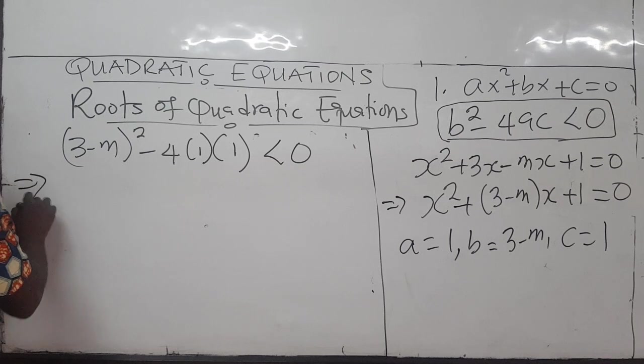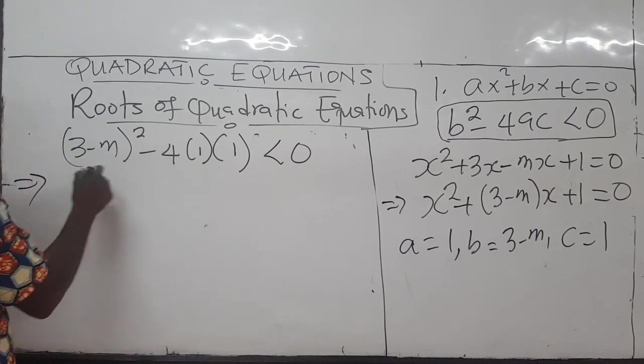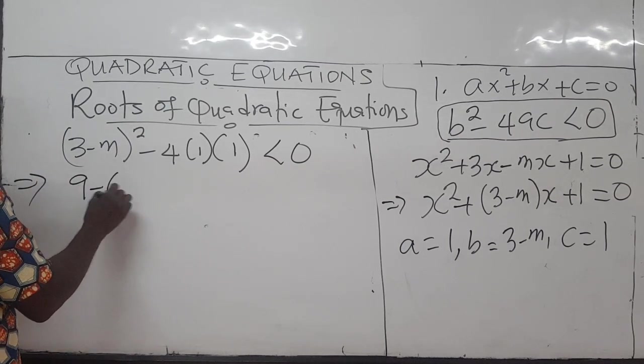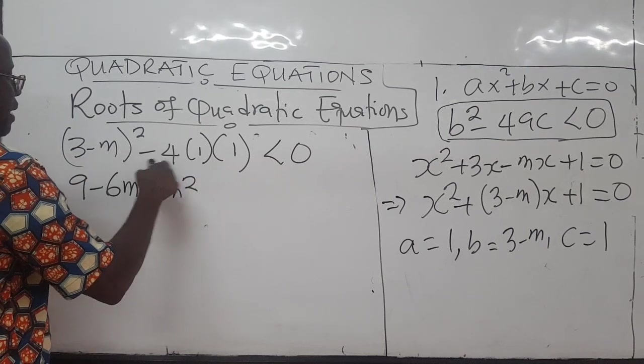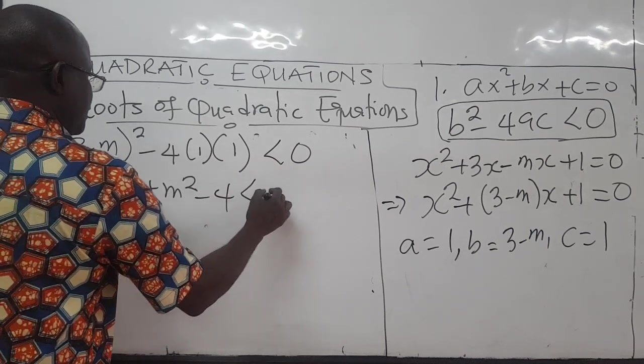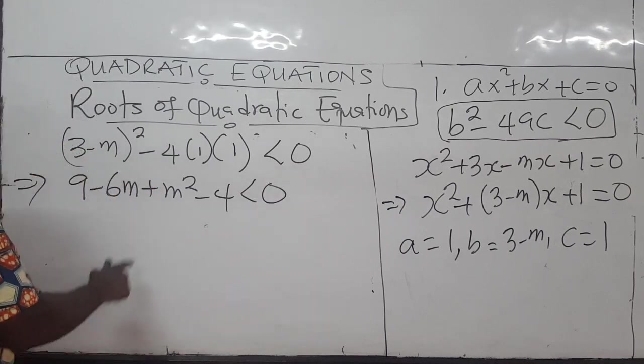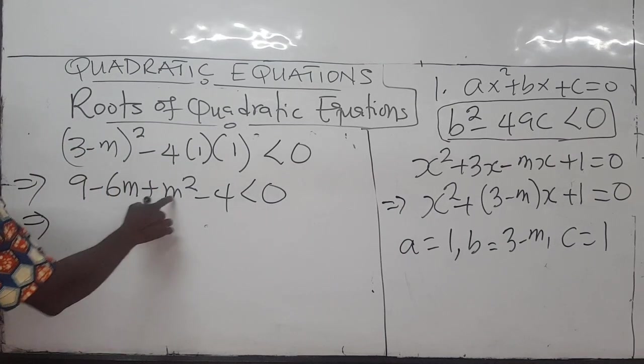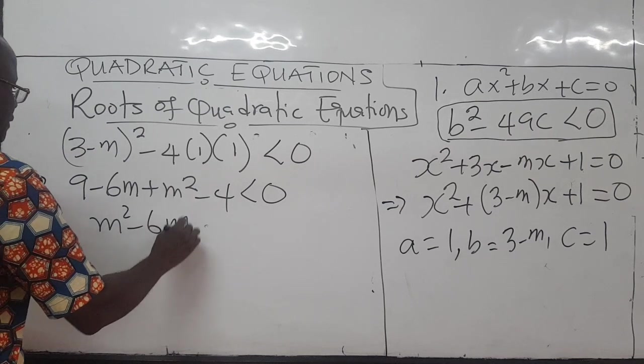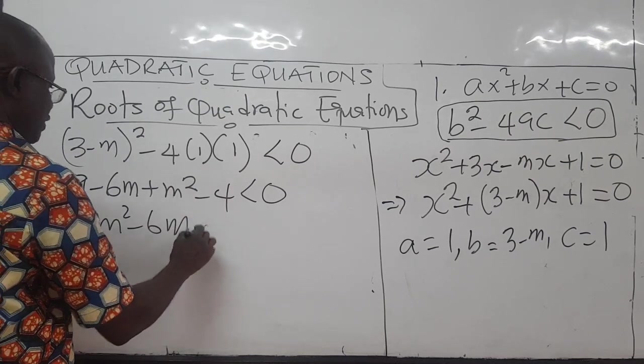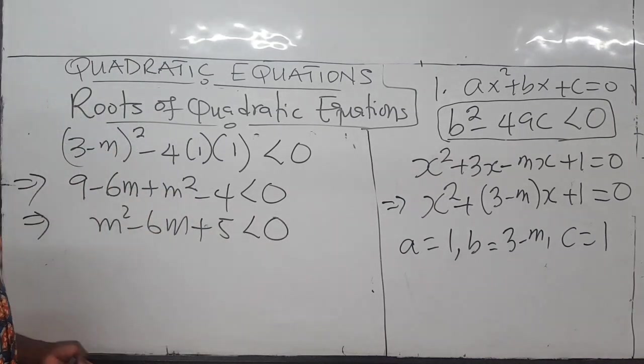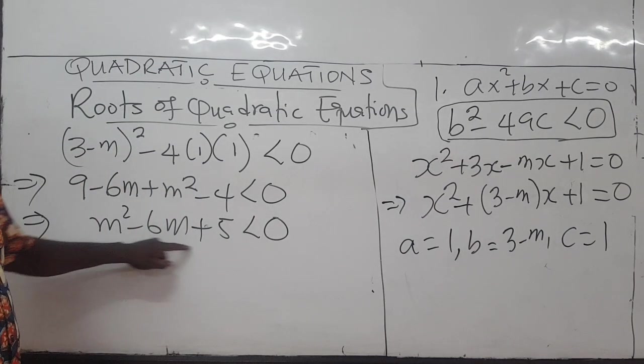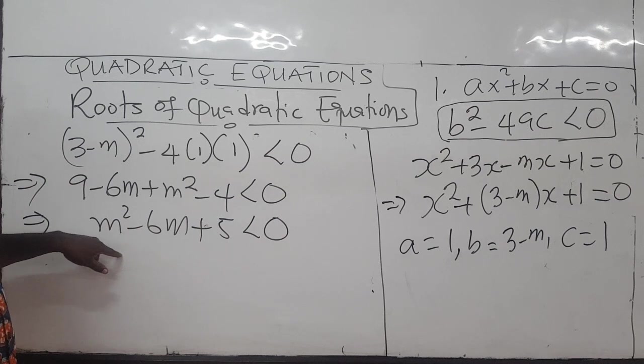So we're going to have, if I expand this, I'm going to have 9 minus 6M plus M squared minus 4. This is less than zero. I'll write it as a quadratic. This is M squared minus 6M, 9 minus 4 is 5. So plus 5 is less than zero. So basically, the question is asking you to solve this quadratic inequality to find the range of values of M. How do you do that?